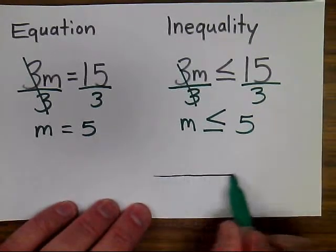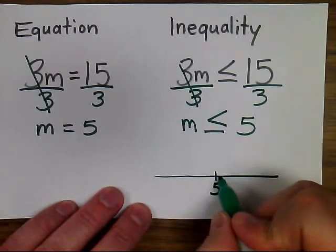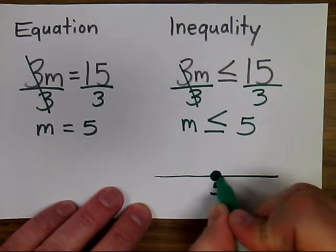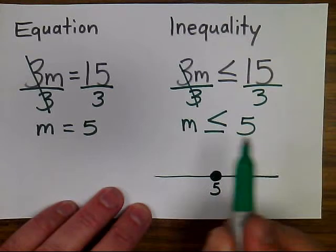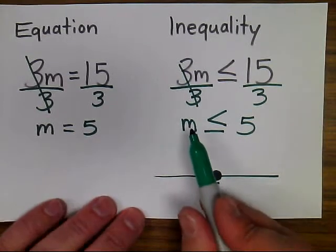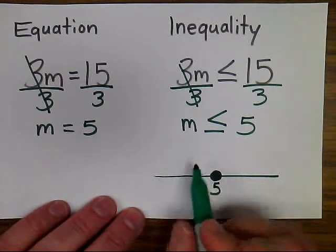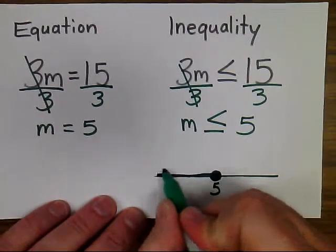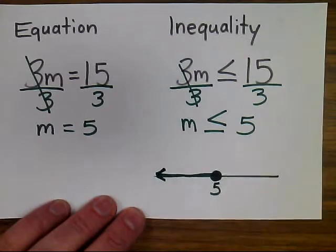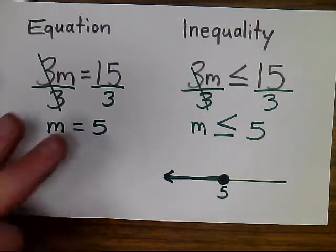So what I'm going to do instead is I'm going to graph my data with a number line showing me that m could equal 5, because it could equal 5, or it could be anything less than 5. So I'm going to think of numbers that I know could make this true, for example 4 or 3 or 2, and I'm going to draw an arrow pointing to the left because that's going to show me every answer to the left of 5 or 5 would be solutions to this inequality. That's called our solution set.